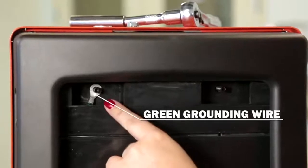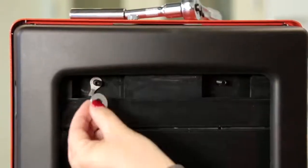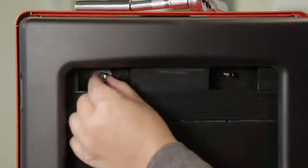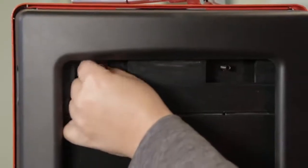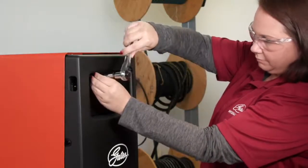Ensure that the green grounding wire goes over the left threaded stud. Add the washer and nuts on each of the threaded studs and hand tighten. Then follow up with a 7 16th deep socket to fully tighten.